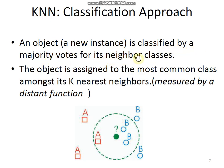A new object or instance is classified by a majority vote of its neighbors' classes. The object is assigned to the most common class among its K nearest neighbors, measured by a distance function.